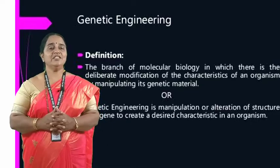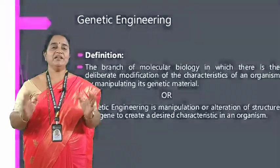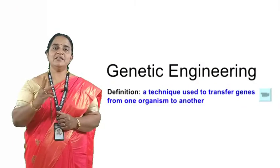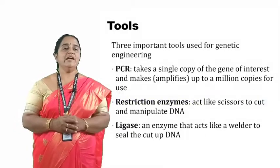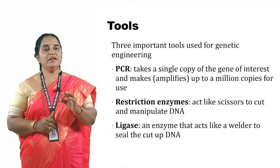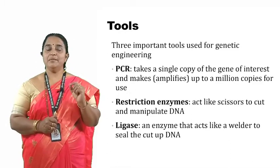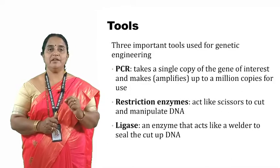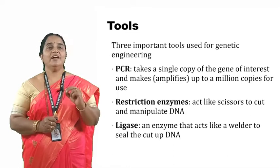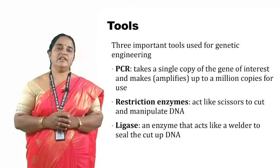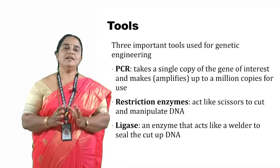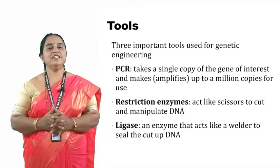For genetic engineering we need to maintain sterile aseptic conditions everywhere. There are mainly three tools involved: number one, enzymes; number two, cloning vectors; and number three, competent host cell. Let us now discuss one by one the tools and their uses in the process of genetic engineering.